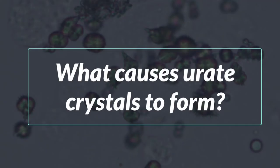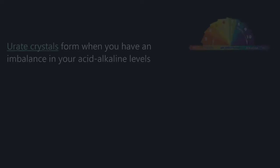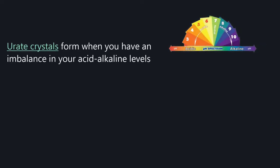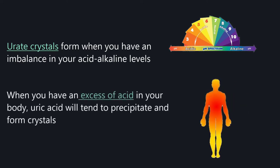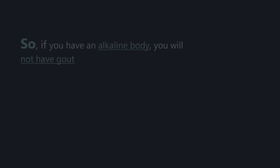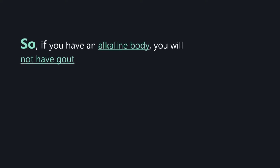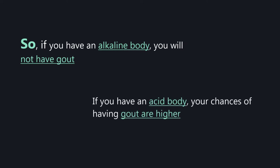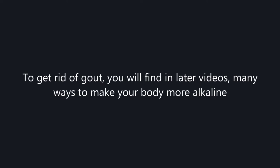Urate crystals form when you have an imbalance in your acid-alkaline levels. When you have excessive acid in your body, uric acid will tend to precipitate and form crystals. If you have an alkaline body, you will not have gout; if you have an acidic body, your chances of having gout are higher. Later videos will cover many ways to make your body more alkaline.